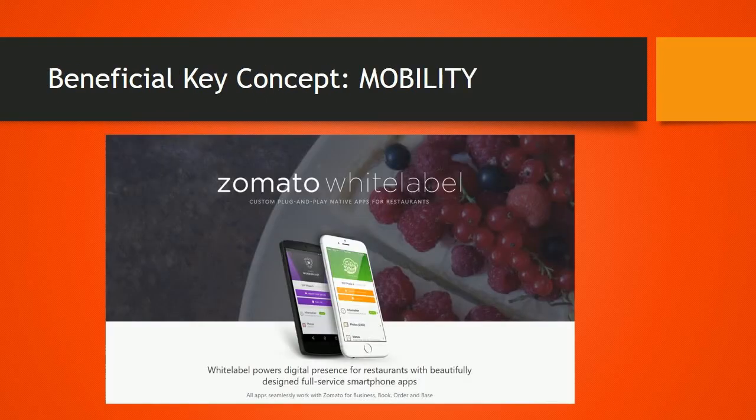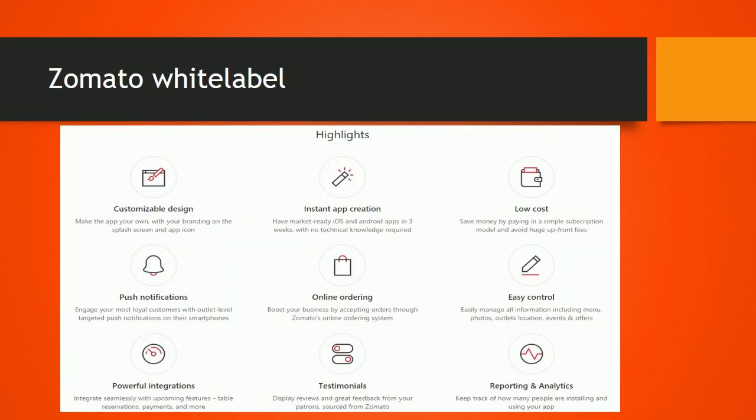One of the key information management concepts which has been very valuable for Zomato in its growth is mobility. Since inception itself, Zomato was launched as a website, and to capture the ever-expanding market of smartphone users, it released an app a few years back. One of the latest developments in the app aspect of Zomato is the launching of Zomato Y2Label — a platform that enables restaurants to launch custom branded native mobile apps.